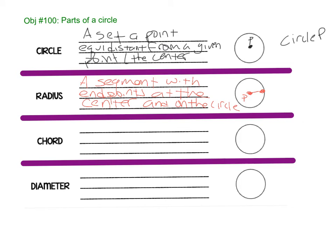A chord. A chord is a segment with end points on the circle. So if I take any two points on the circle and connect them, that is a chord. A segment with end points, both end points on the circle. So if I call that BV, that is chord BV.